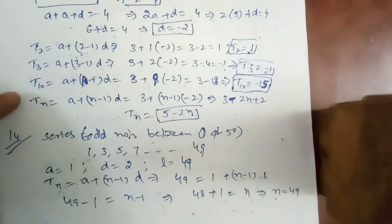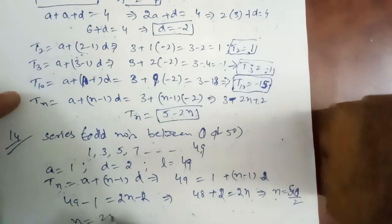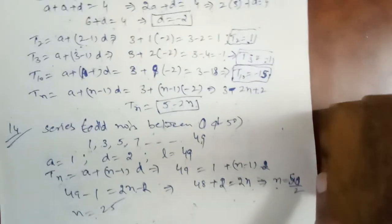But n should not be equal to 49. There is a difference of 2, so it should be near 25, 26. There is something mistake. Yes, this is the mistake. D is equal to 2. This is 2n minus 2, 2n plus 2. This is 50 by 2, that is 25. Now n is equal to 25.